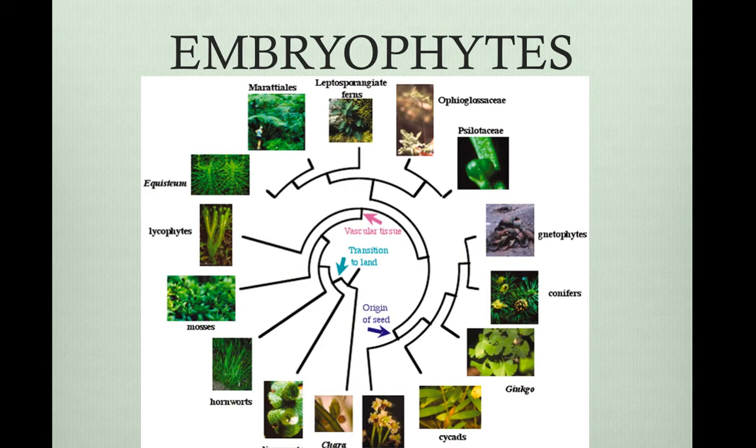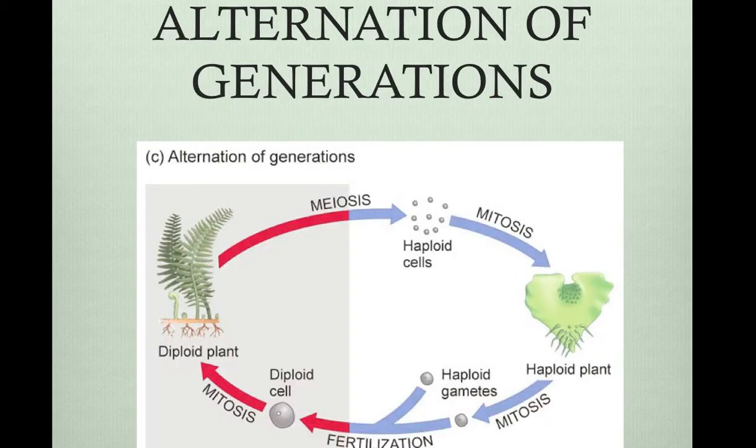Alternation of generations is a life cycle in which there is both a multicellular diploid form, which is called the sporophyte and that produces spores, and a multicellular haploid form, which is the gametophyte, that produces gametes. Alternation of generations is not present in charophyceans, the ancestors of land plants.